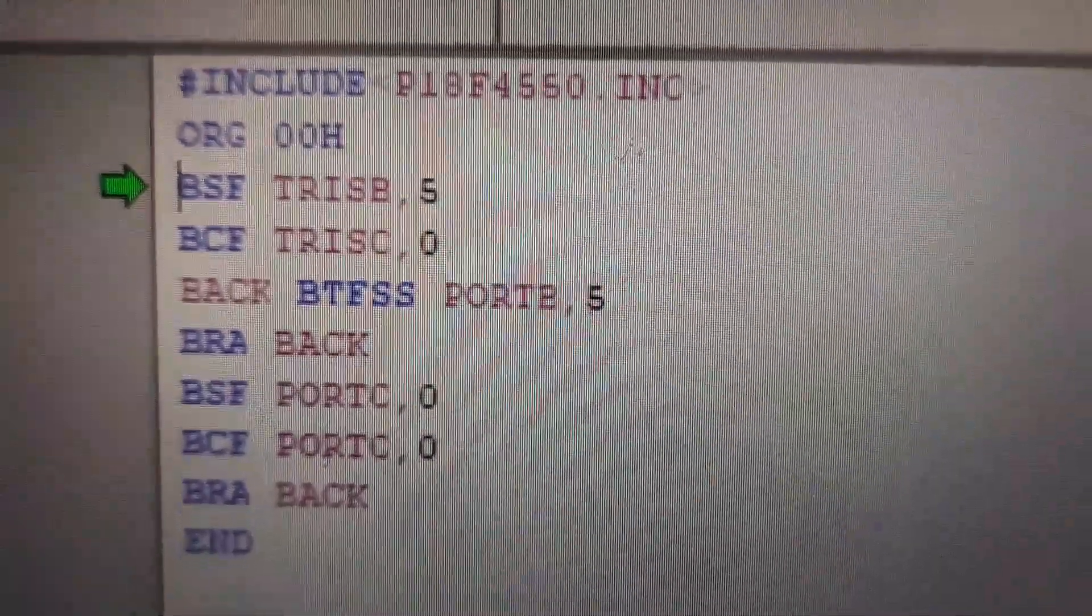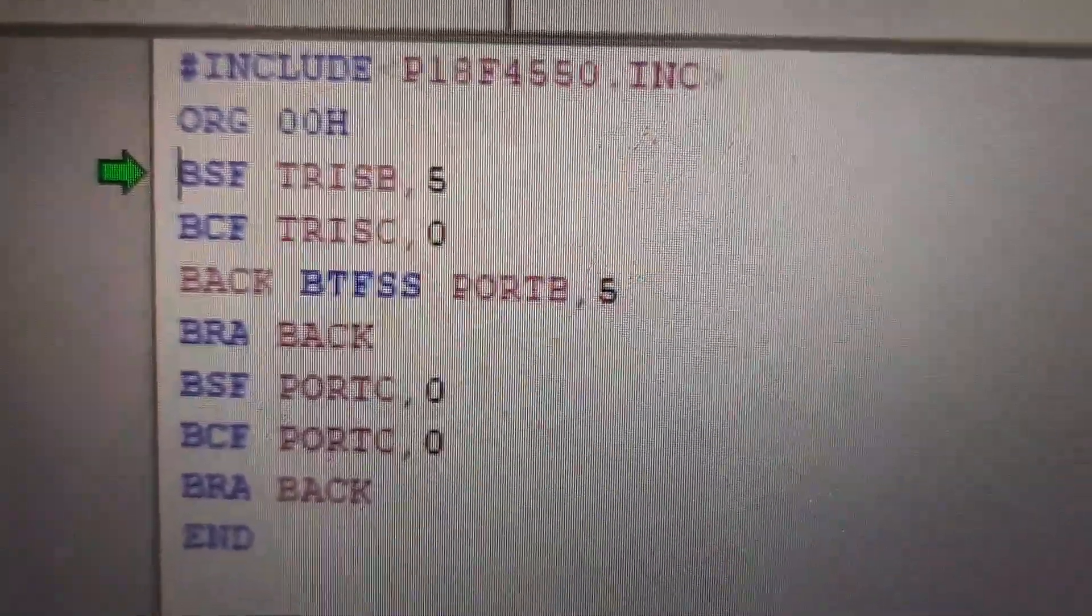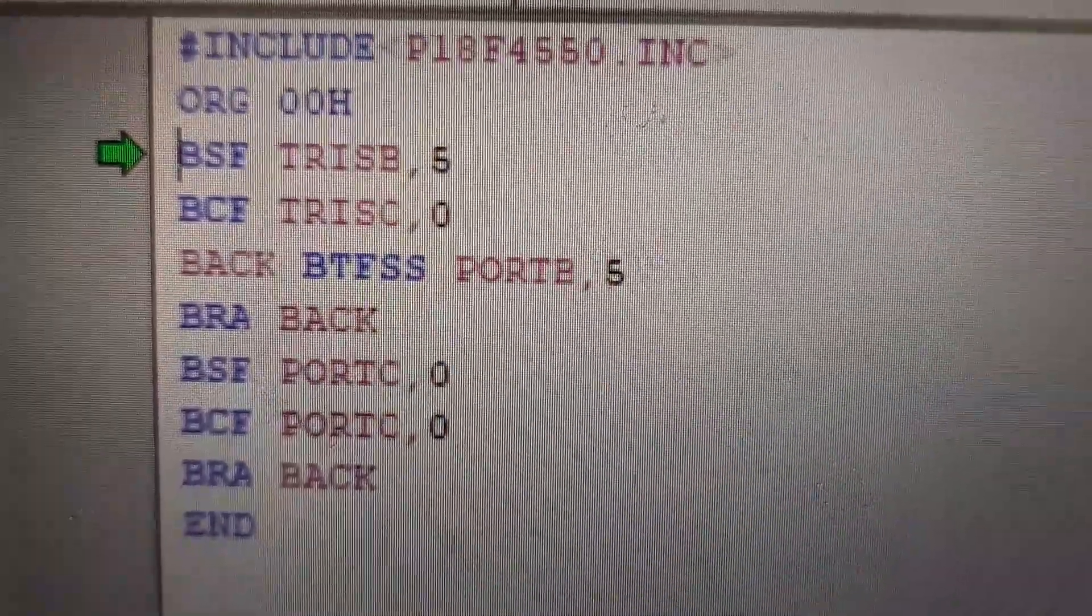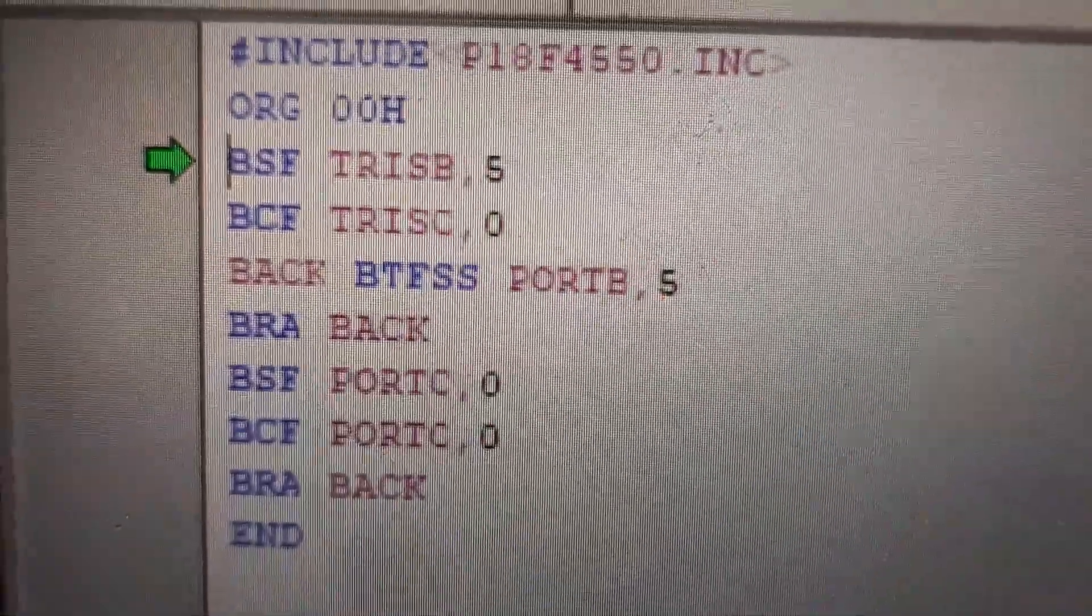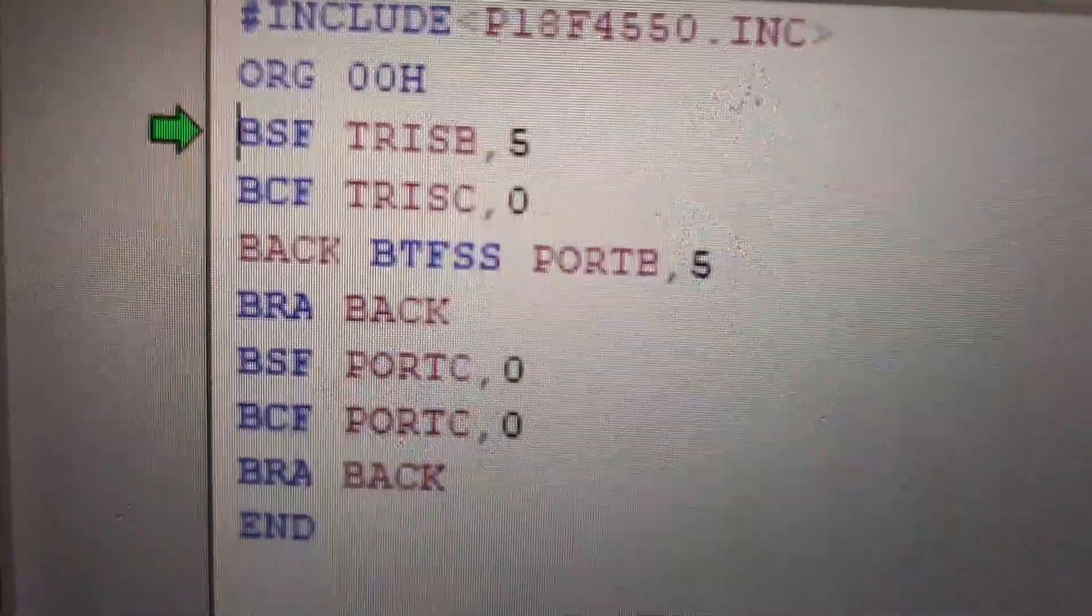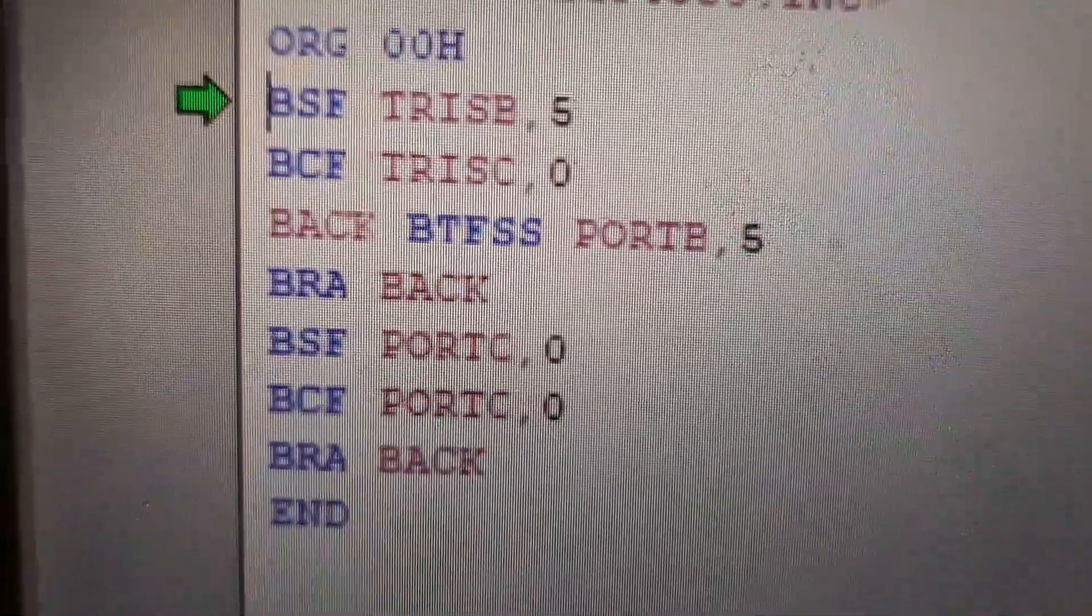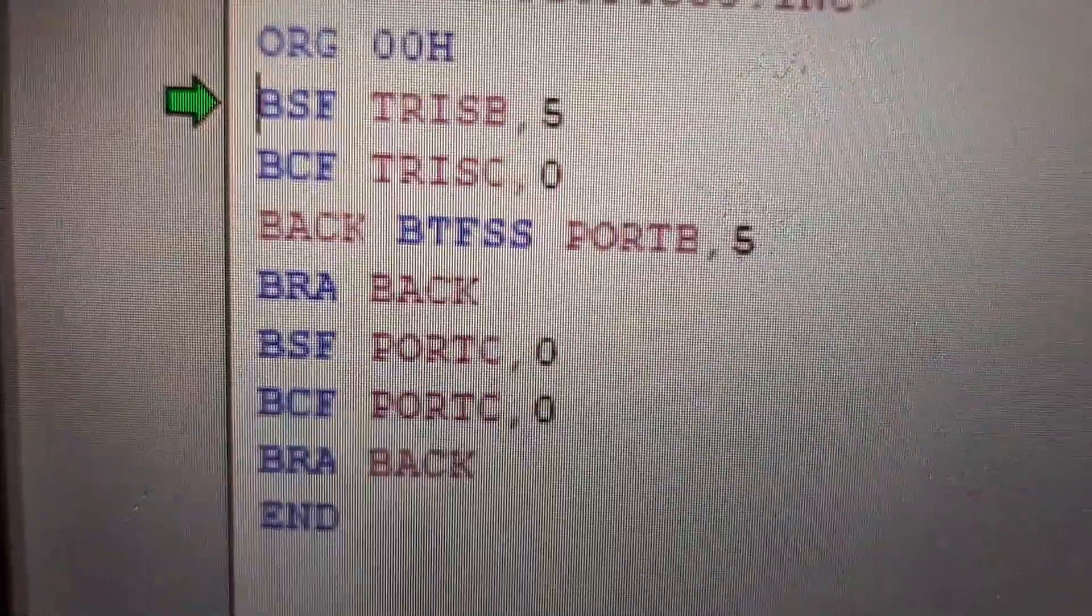So here I have written the code for performing the task. Bit set file register TRISB comma 5 is actually the input pin where the switch is connected, while the TRISC comma 0 is the output pin where we are connecting the buzzer.